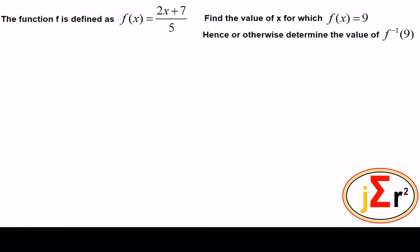Now we will recount the requirement of the problem solved on the previous slide: find the value of x for which f(x) = 9. Hence, or otherwise, determine the value of f⁻¹(9). We know that in isolation, to find f⁻¹(9), we just find f⁻¹(x) then substitute 9 into it.